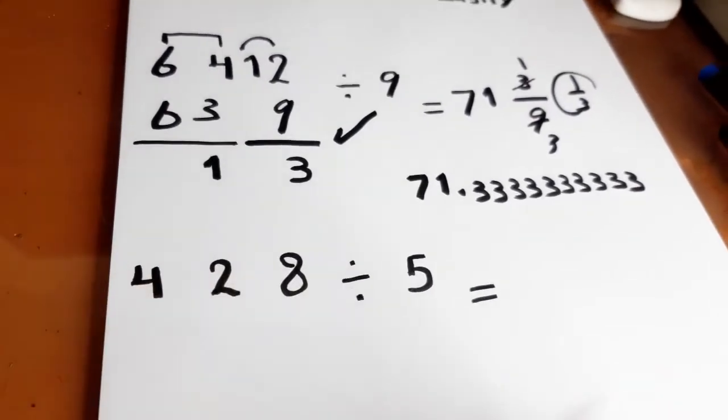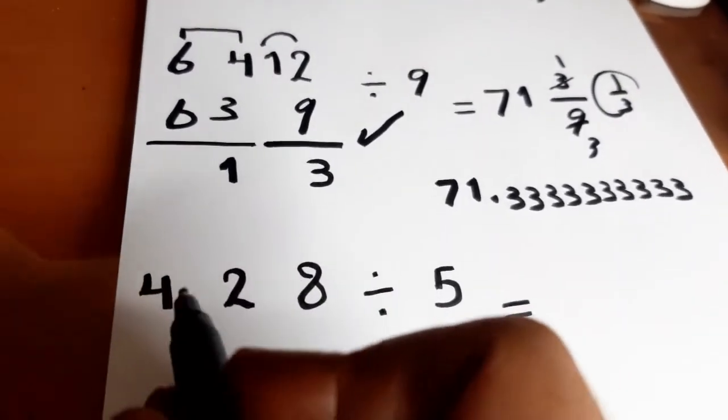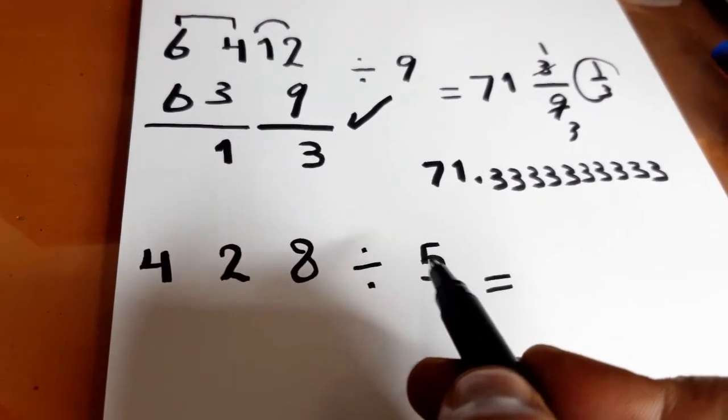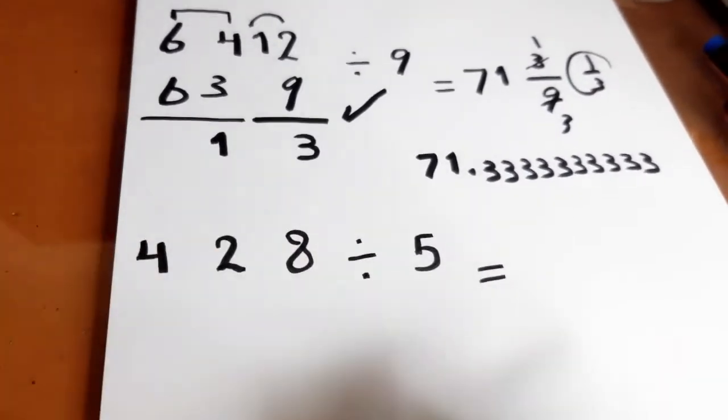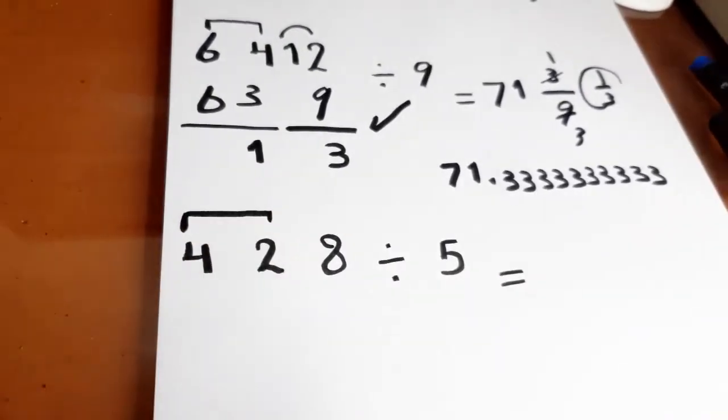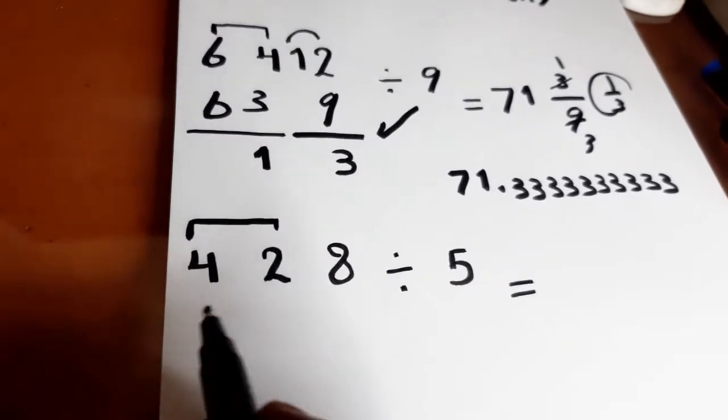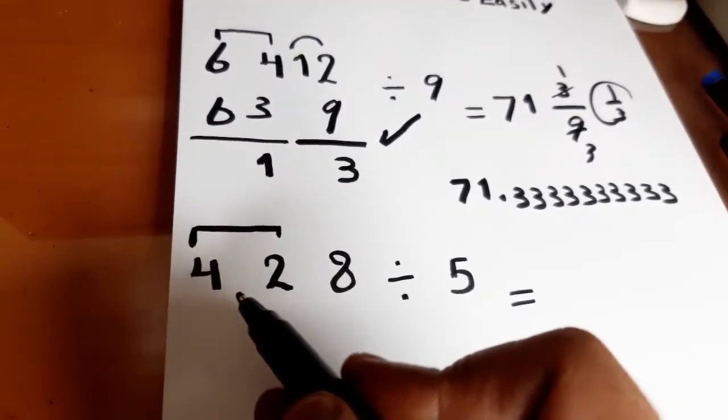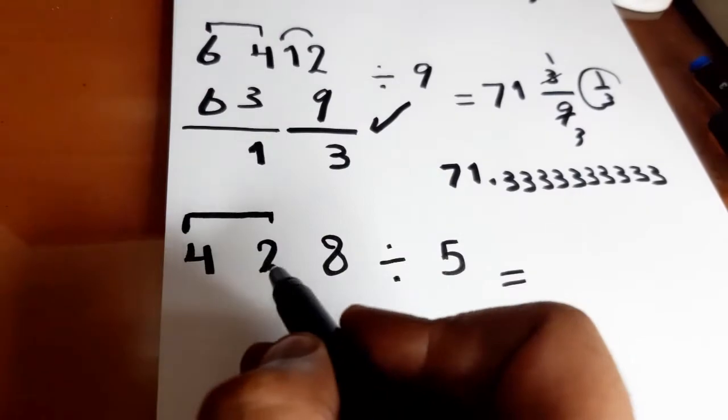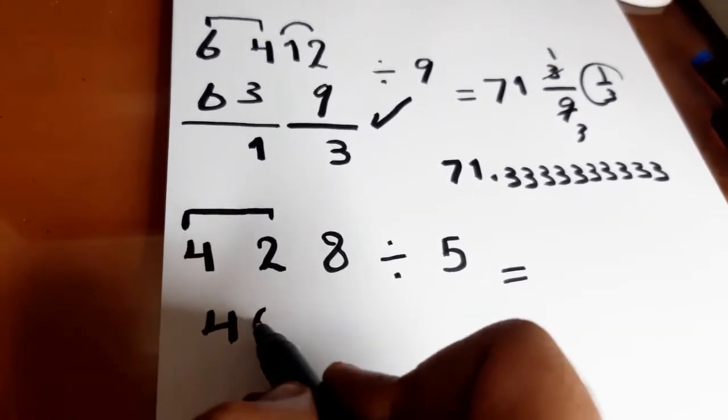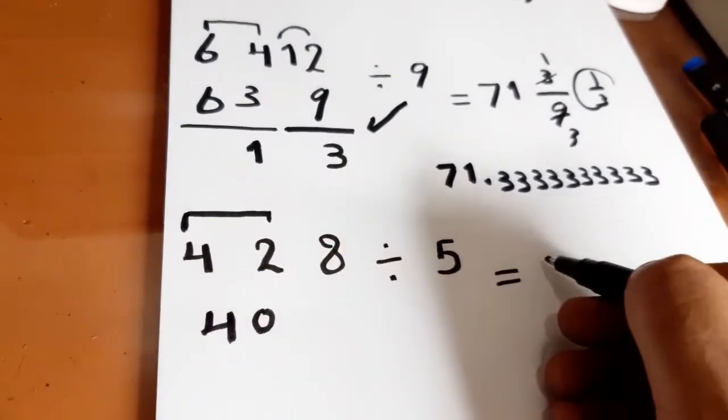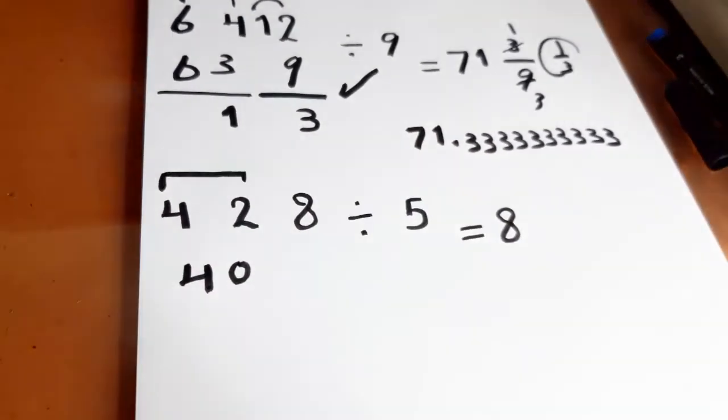428 divided by 5. 4 divided by 5, no. 4 is indivisible by 5, so we will take 2 with 4. Now we have a new number, 42. But 42 also is not divisible by 5. We will reduce 42 to 40. Now 40 divided by 5 equals 8. We will write 8 here.